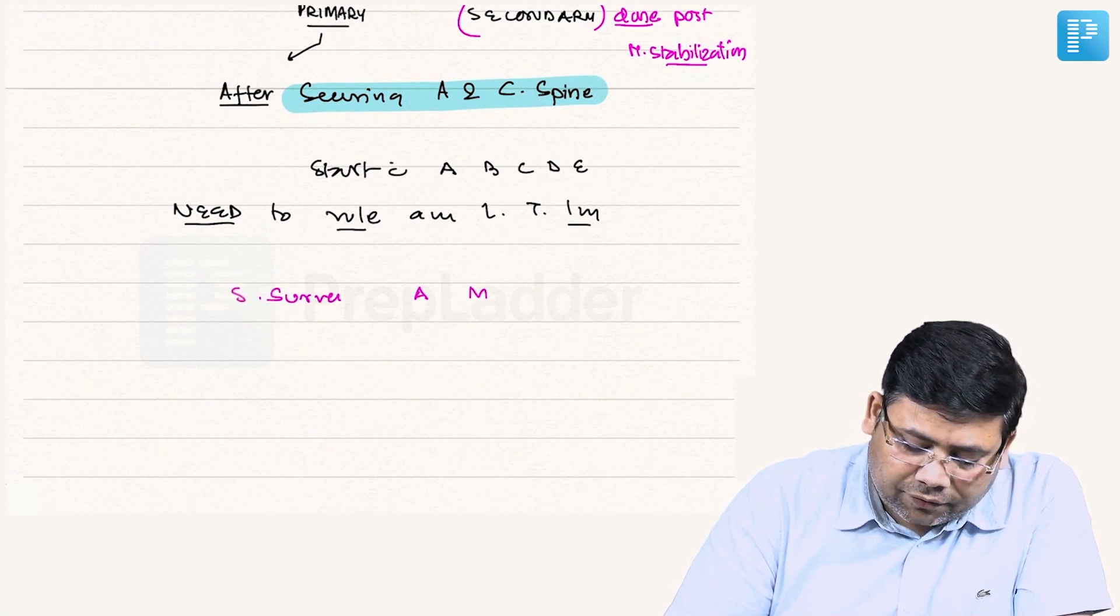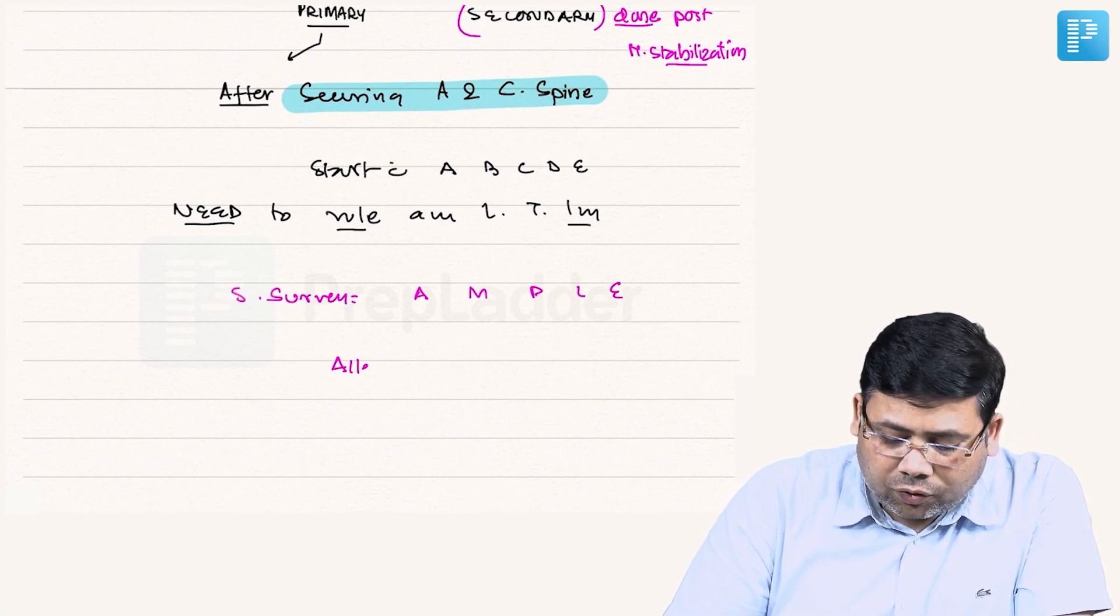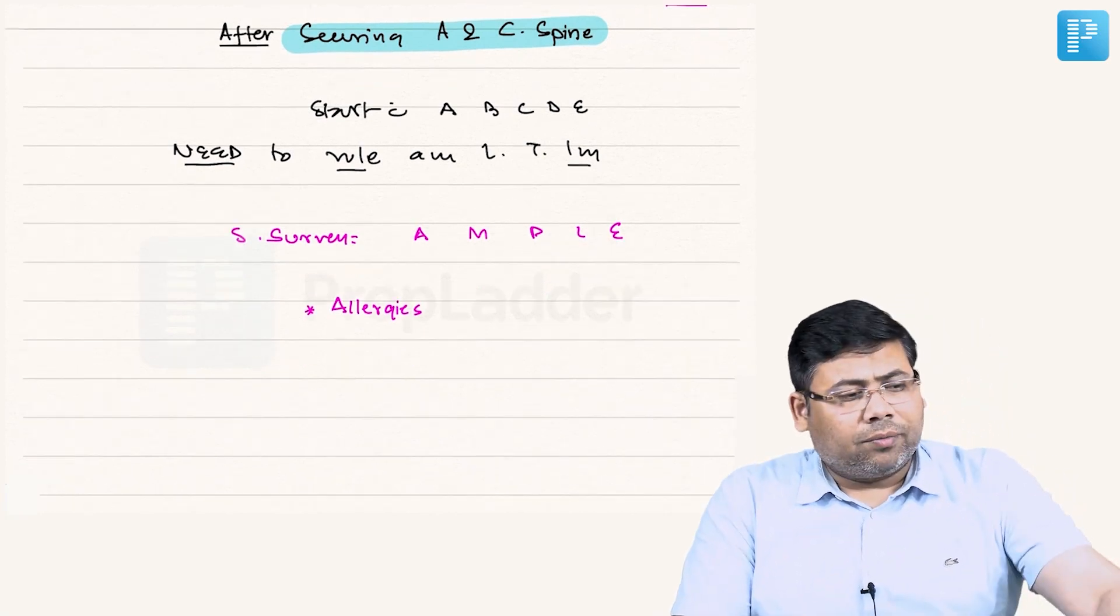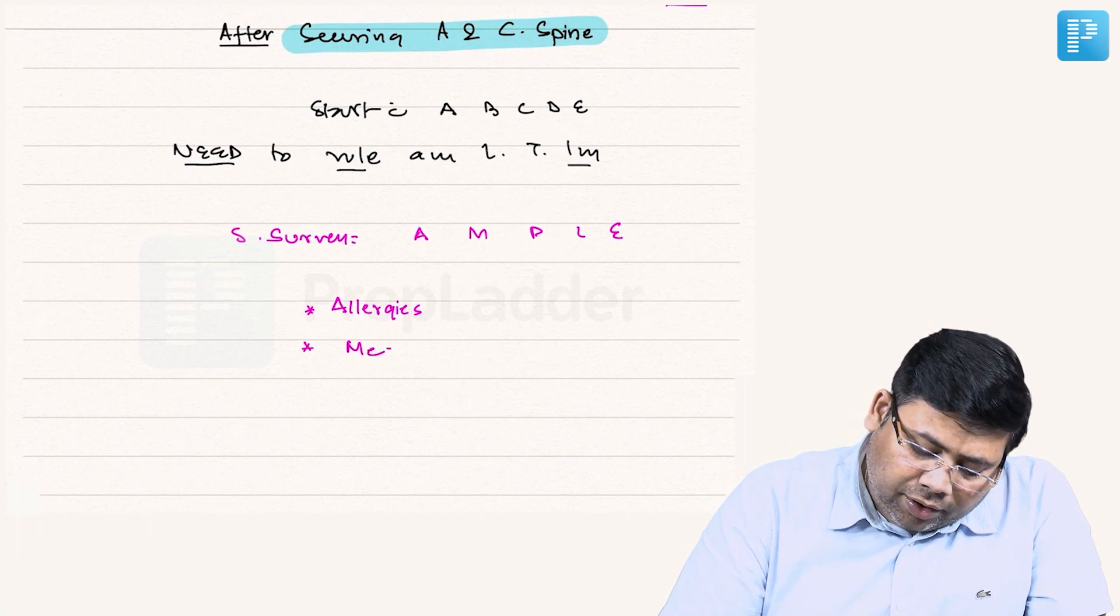If you talk about secondary survey, we talk about AMPLE. What do you mean by AMPLE? We have to talk about the allergies - we have to take it out from the history whether the patient is allergic to any drug or not. M for medication.